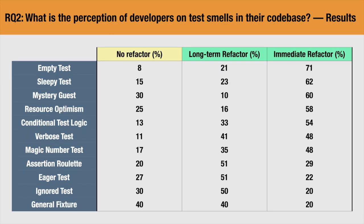In this table we can see for each smell whether participants marked it as short-term refactoring, long-term refactoring, or no refactoring at all. The smells with the highest refactoring priority are Empty Test, Sleepy Test — a test with Thread.sleep — and Mystery Guest. On the other hand, the ones with the least priority are Eager Test — tests with too many production calls — Ignore Test, and General Fixture.